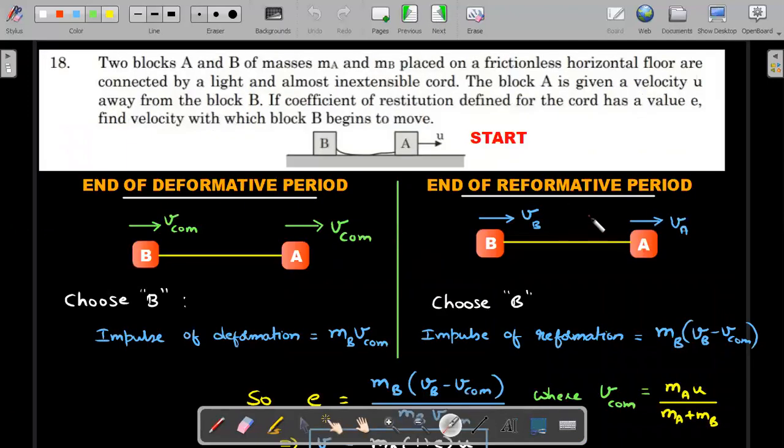Two blocks A and B of mass MA and MB are placed on a frictionless horizontal floor, connected by light and almost inextensible chord. Block A is given a speed u and moves away from block B. Coefficient of restitution is E. Find the velocity with which block B begins to move. This begins to move means not immediately after the thread becomes taut, but after that entire interaction is over - both deformative and reformative period should be over.